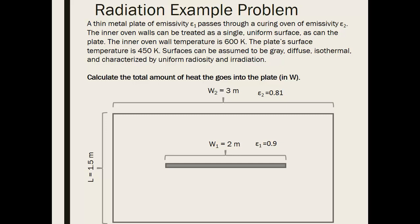The problem states a thin metal plate of emissivity epsilon 1 passes through a curing oven of emissivity epsilon 2. The inner oven walls can be treated as a single uniform surface as can the plate. The inner oven wall temperature is 600 Kelvin, the plate surface temperature is 450 Kelvin.